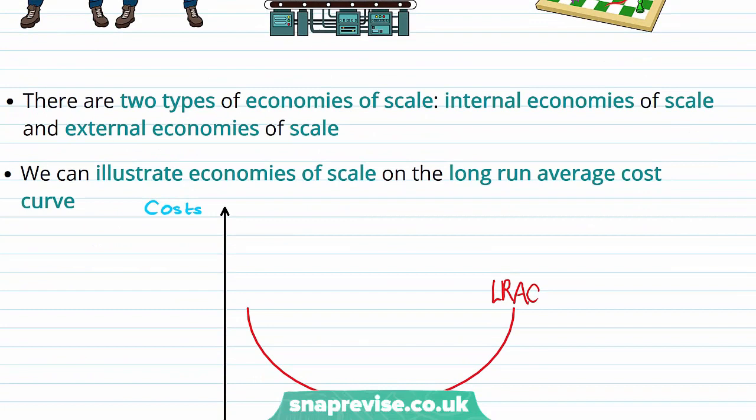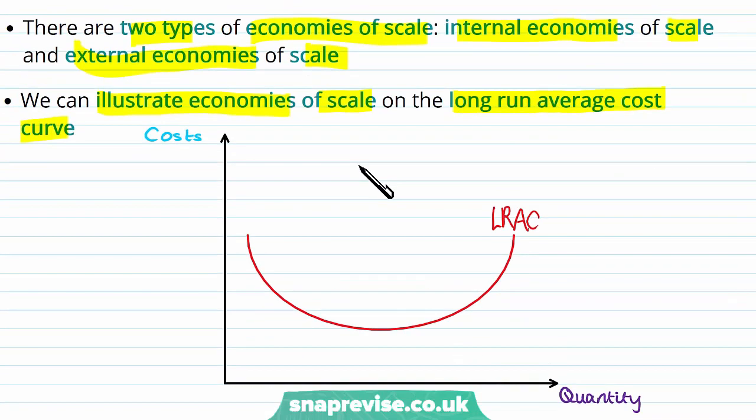There are two types of economies of scale: internal economies of scale and external economies of scale. And we can illustrate economies of scale on the long run average cost curve. But we'll come back to what internal economies of scale and external economies of scale are in a later video.